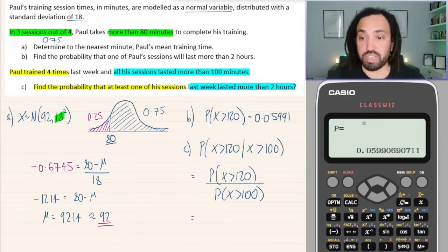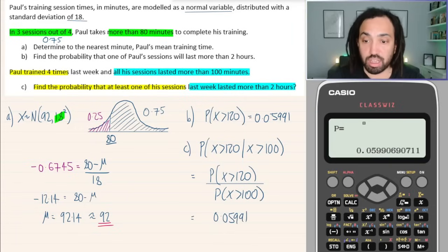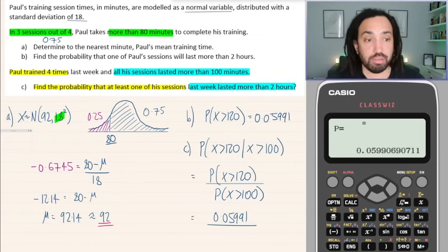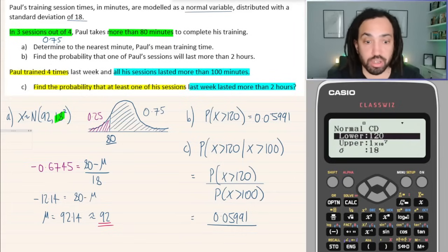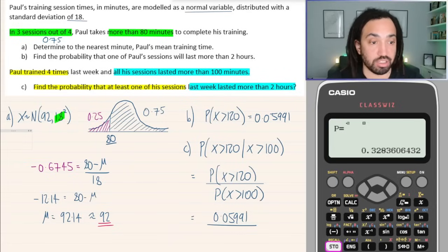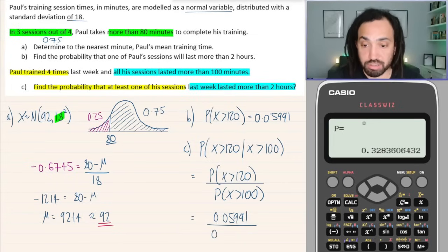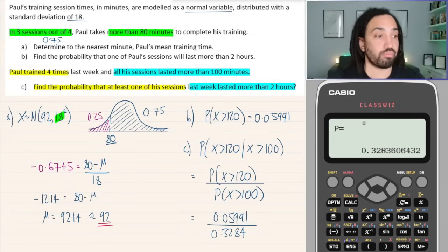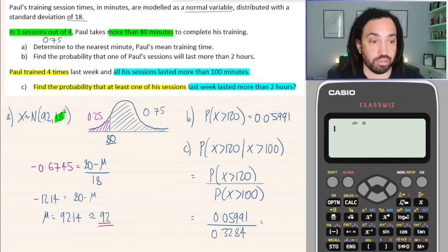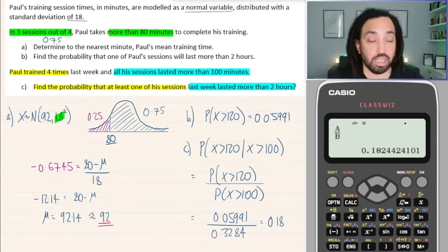Okay so we already have the top of this fraction which is good so we just need to find the probability of greater than 100. So I'm going to keep this in my calculator so once again I'm going to store it to A and then I'm going to go back and I'm going to go greater than 100 this time. Yes and then I'm going to store that one to B. So I press store B. Brilliant. So that number was 0.3284. Okay great. So now what I could do is I can go back and I can just do A over B and that's just going to give me the answer to this which is 0.1824. Okay lovely. Right let me just grab some more space.